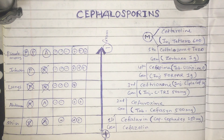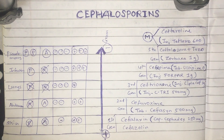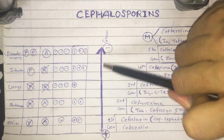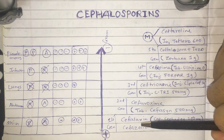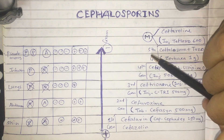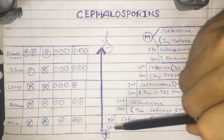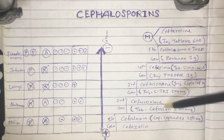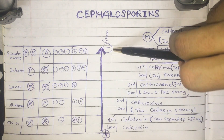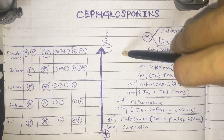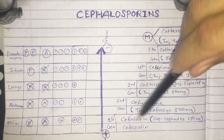Today we are going to discuss the generations of cephalosporins. There is always a question asked: when fifth generation cephalosporins are available, why do we still use first, second, third, and fourth generation cephalosporins in daily practice? As we go higher in generation from first to fifth, their activity shifts from gram-positive to gram-negative microorganisms. First generation acts better on gram-positive, and higher generations act better on gram-negative.